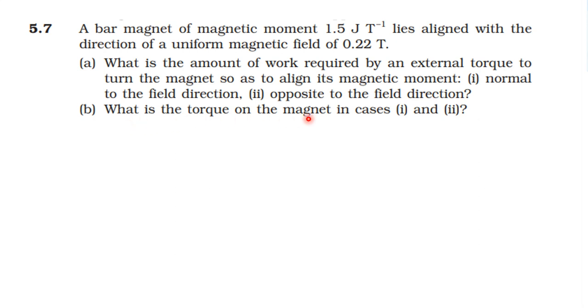What is the torque on the magnet in each case? If we look at magnetic moment 1.5, the magnetic field is 0.22. Magnetic moment m, angle between B and m theta.